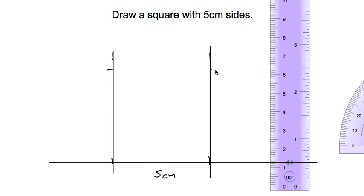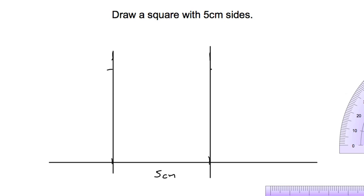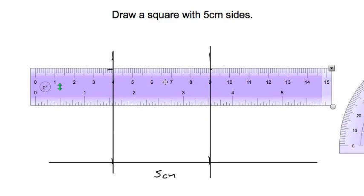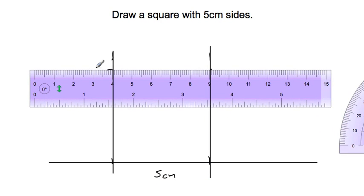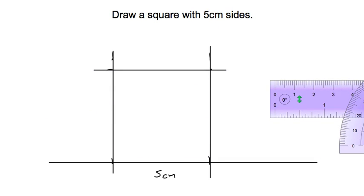All right, so I've measured five centimeters on this side, and on this side, and the last thing I need to do is just connect those two, and I'll have my square. All right, so I have a square.